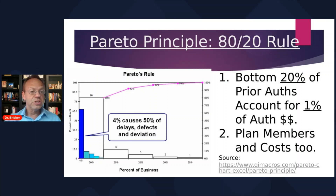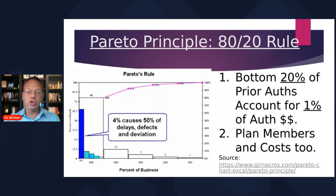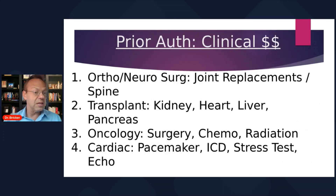When engaging the population, it's critically important to know which part of the population you are engaging. If you're engaging the bottom 60% of your plan members, you will have almost zero impact on the plan's cost. It's not just the quantity of engagement that matters — it is the quality of the engagement and who specifically you are engaging.